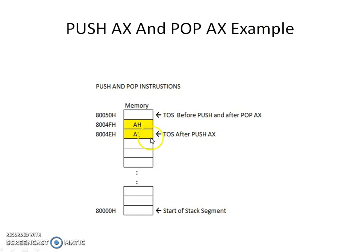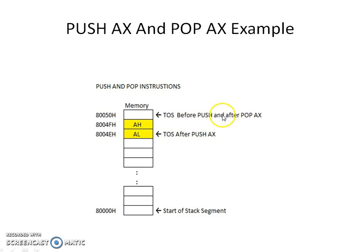When you pop AX back, it is initially pointing to that location. First, the contents at that location are loaded into the AL register and the stack pointer is incremented by 1, now pointing to 8004FH. Then it pops the contents at that location into the AH register and the stack pointer is incremented by 1 again, now pointing to 8005H. So the top of the stack points to 80050H both before the PUSH and after the POP AX instruction.